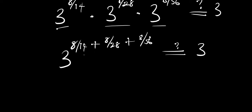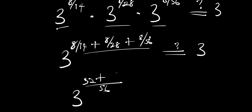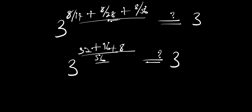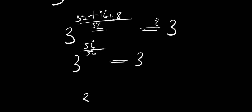We find the common LCM, which is 56. So we have 3 to the power of: 56 divided by 14 is 4, times 8 gives 32; plus 56 divided by 28 is 2, times 8 gives 16; plus 56 divided by 56 is 1, times 8 gives 8. Adding 32 plus 16 plus 8 gives 56. So we have 3 to the power 56 over 56, which equals 3 to the power 1, equals 3. This confirms that m equals 3 to the power 8 over 7 is absolutely correct.